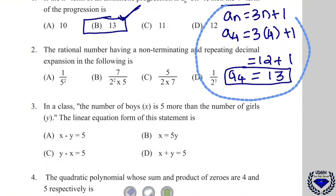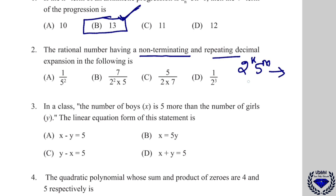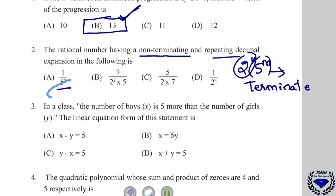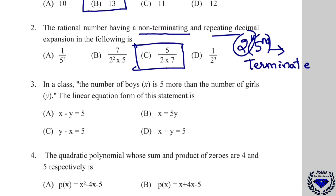Question number 2 asks which rational number has a non-terminating and repeating decimal expansion. If the denominator is in the form 2^n × 5^m, the decimal is terminating. The first option has 5 and the second has 2 and 5 — both terminating. The third option has 7 in the denominator, so it is non-terminating. The correct answer is option C.